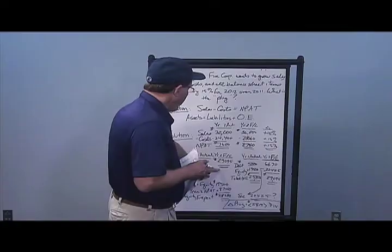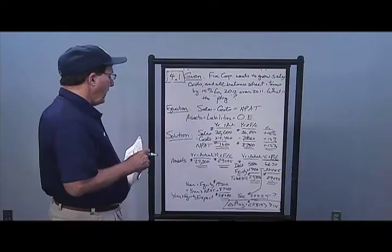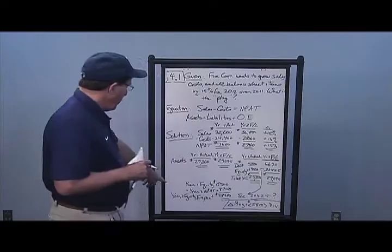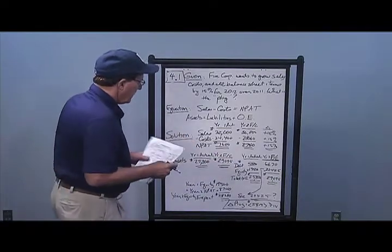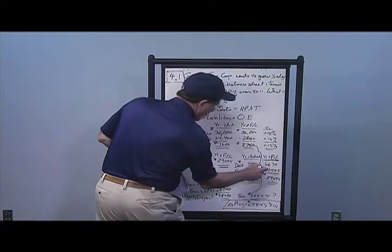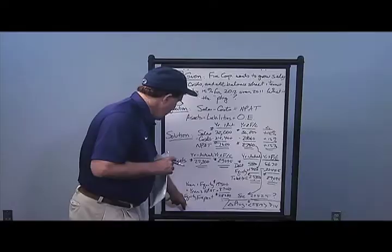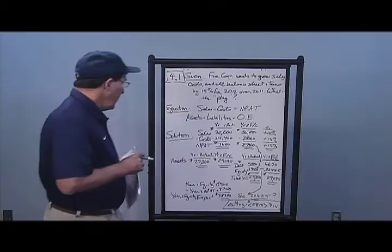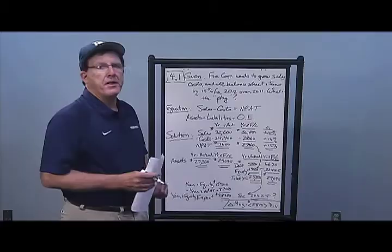My year two assets of 29,095 equal my liabilities plus owner's equity of 29,095 — everything looks balanced. But here's what happened: my year one equity is 19,500, and not knowing anything else, I would expect all of my net income to go right into that equity account. So I would expect to see a year two equity number of 28,240.